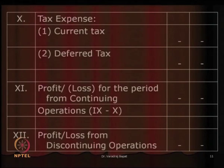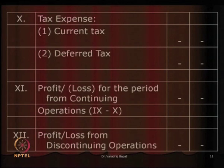From profit before tax, taxes are reduced. Taxes are divided into current tax and deferred tax. Current tax is the taxes you pay for the current period — if I earn 100 rupees and my tax rate is 30%, I pay 30 rupees as current tax. Deferred tax is when some tax provisions allow you to reduce your tax now, but that tax becomes payable in future. Instead of paying now, I may have to pay after 5 years. Such taxes are known as deferred tax.